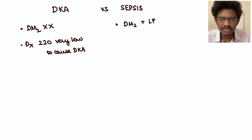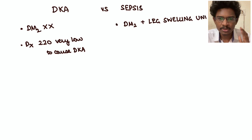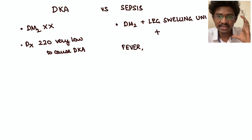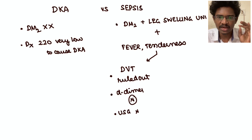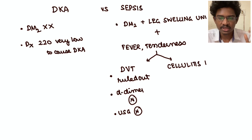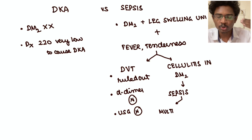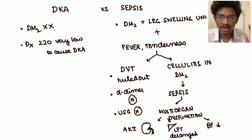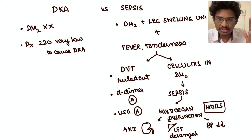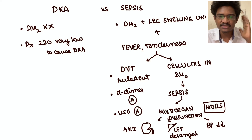In a diabetic patient with unilateral leg swelling, cellulitis and DVT should come to mind. DVT has been ruled out with normal D-dimer and normal ultrasound venous Doppler. So the only choice is cellulitis causing high-grade fever — meaning sepsis has started. The kidney function tests are deranging into AKI, liver functions are also deranging, and BP is in the hypotensive range — the patient is in septic shock with multi-organ dysfunction.